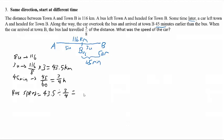The bus speed works out to 58 km per hour. However, that is the speed of the bus, and that's not what we want — we want the speed of the car. To find the speed of the car, we need to take the distance divided by the time for the car to travel from A to B.